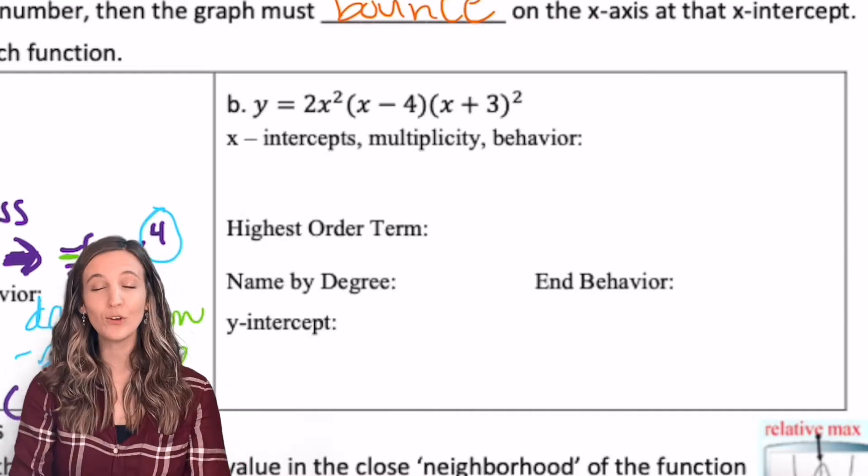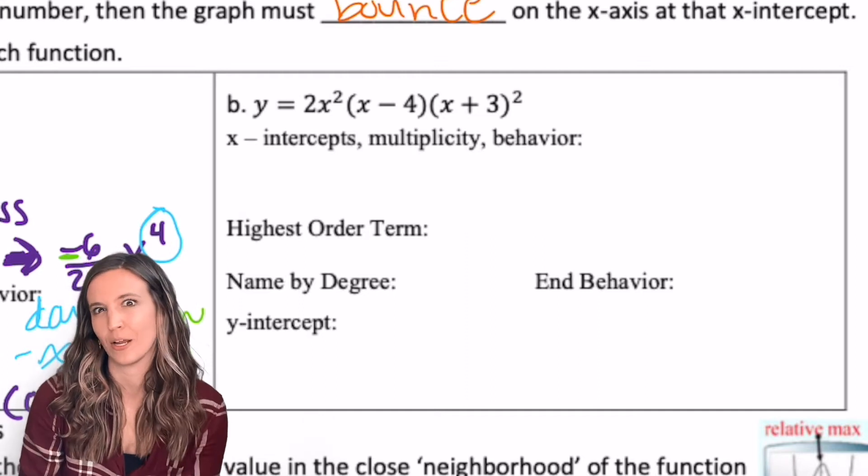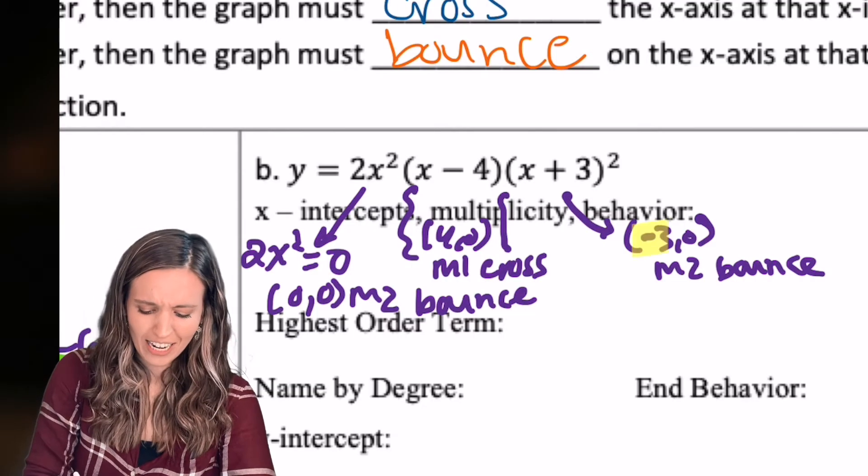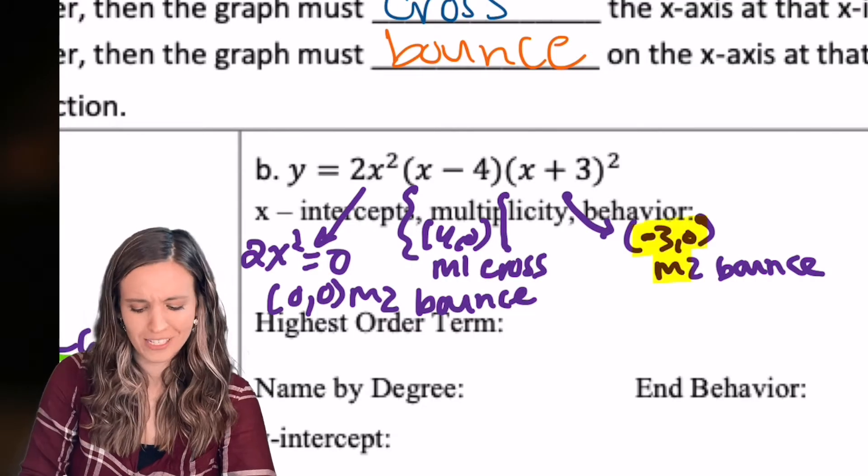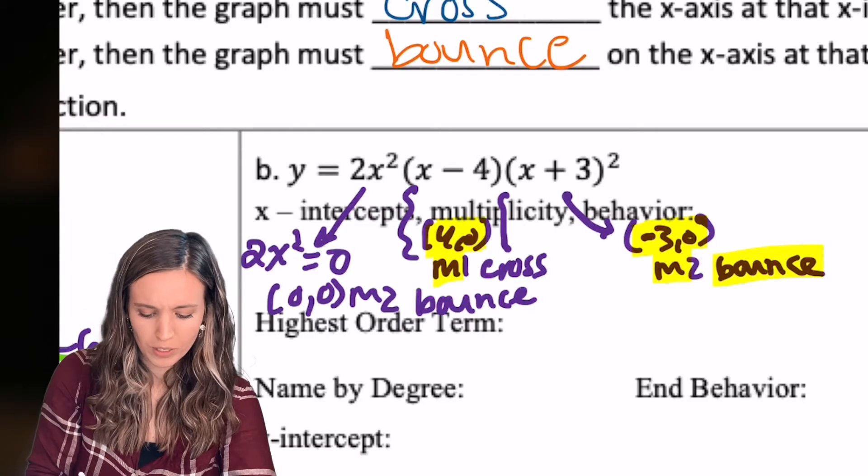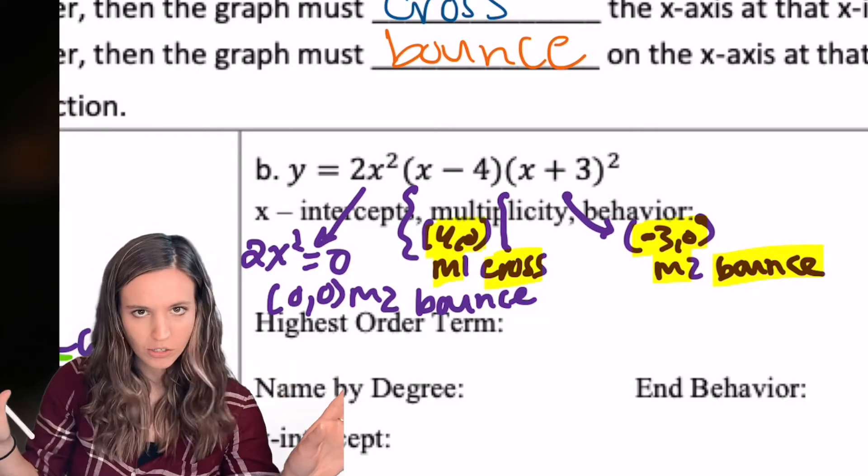Looking at this next one, see if you can find the x-intercepts multiplicities and their behavior without me. Let's see how you did. Negative three zero, one of my x-intercepts, multiplicity two, and a bounce. No problem, right? Four zero, multiplicity one, cross. Also no problem.